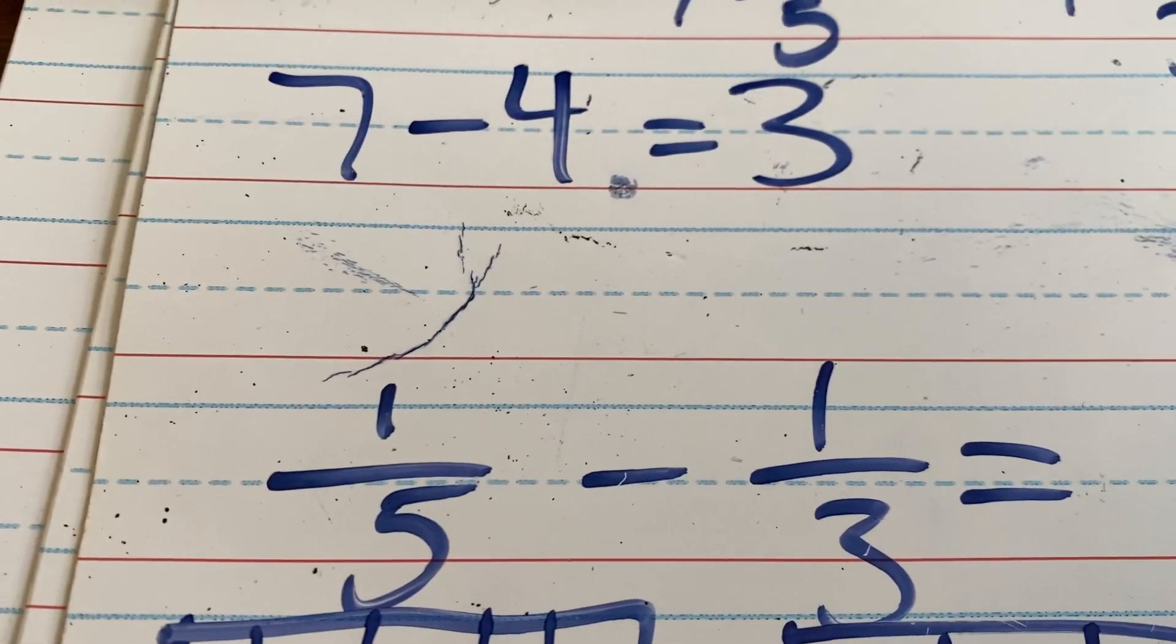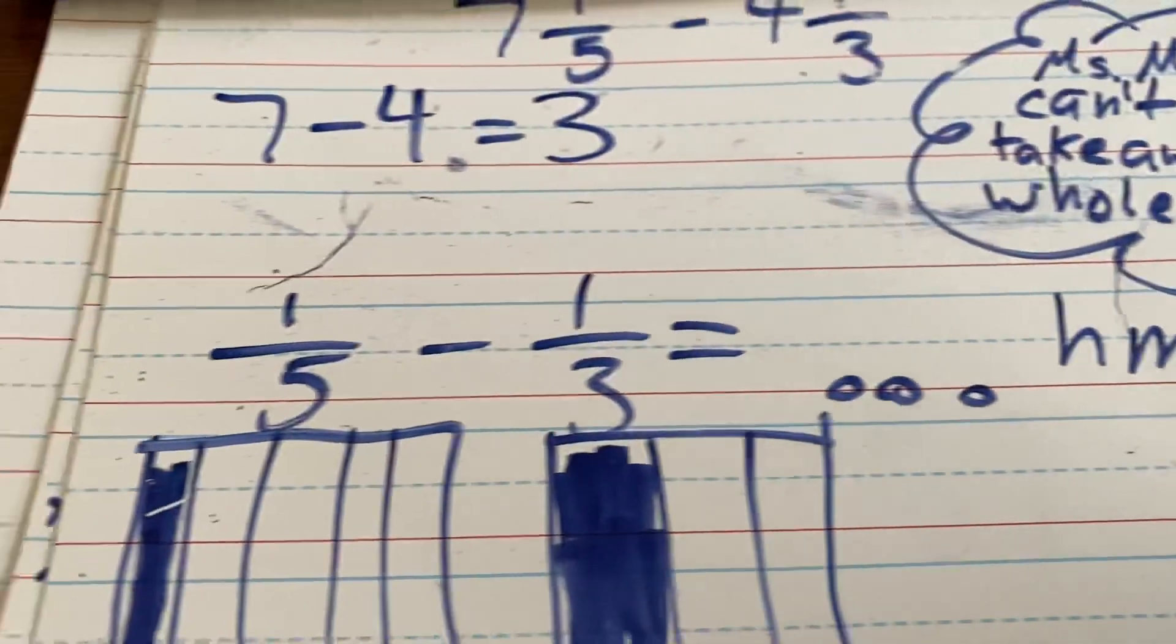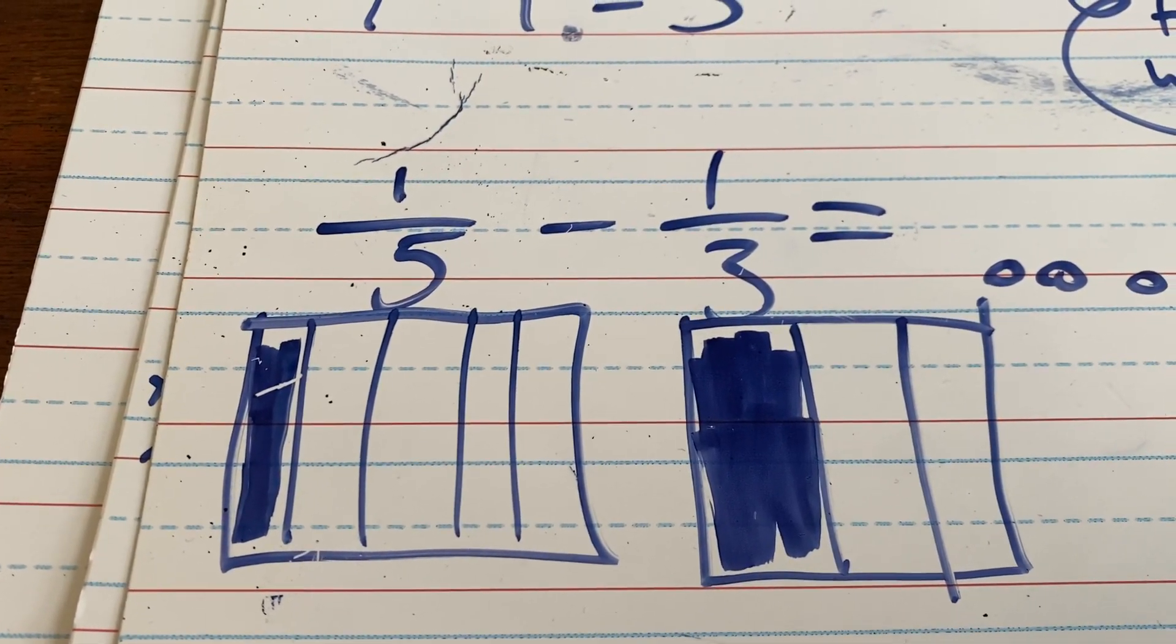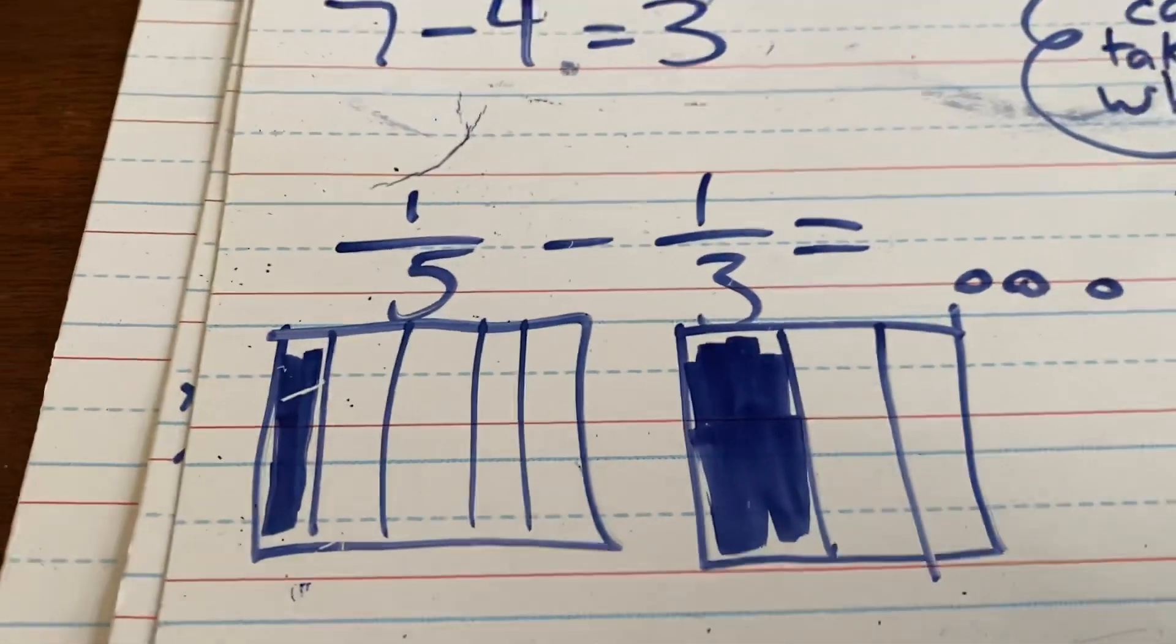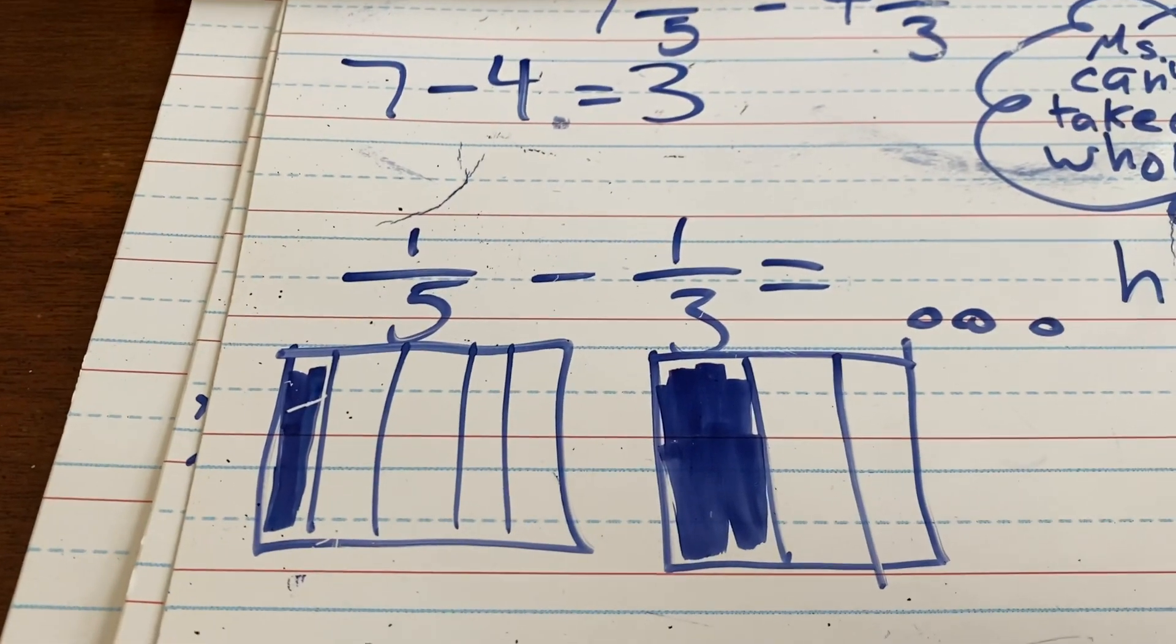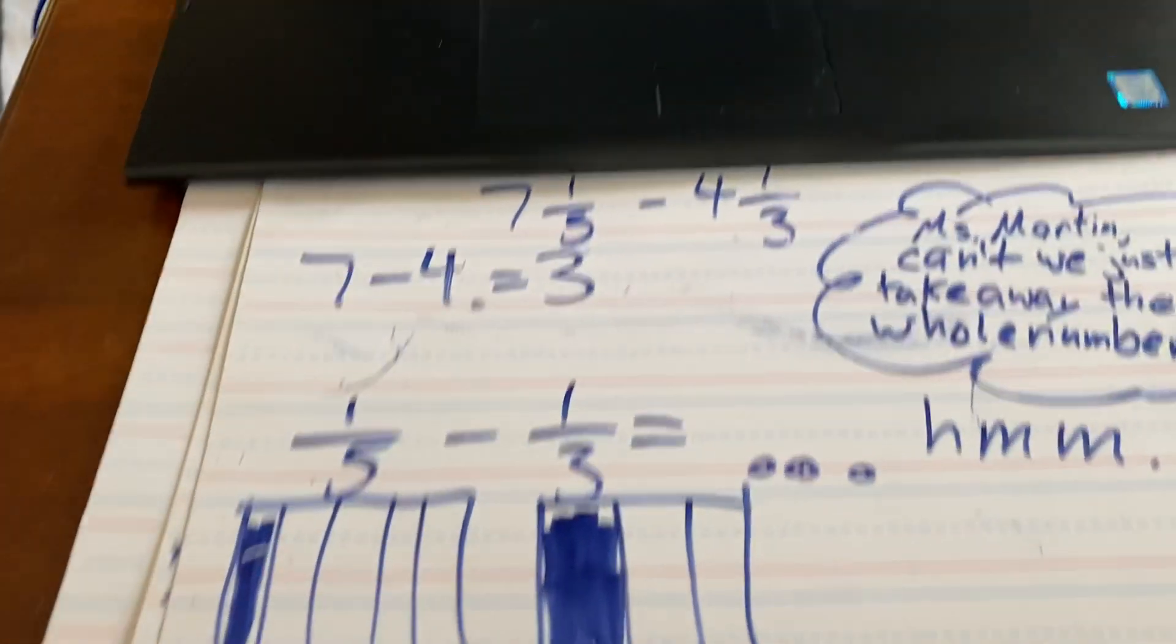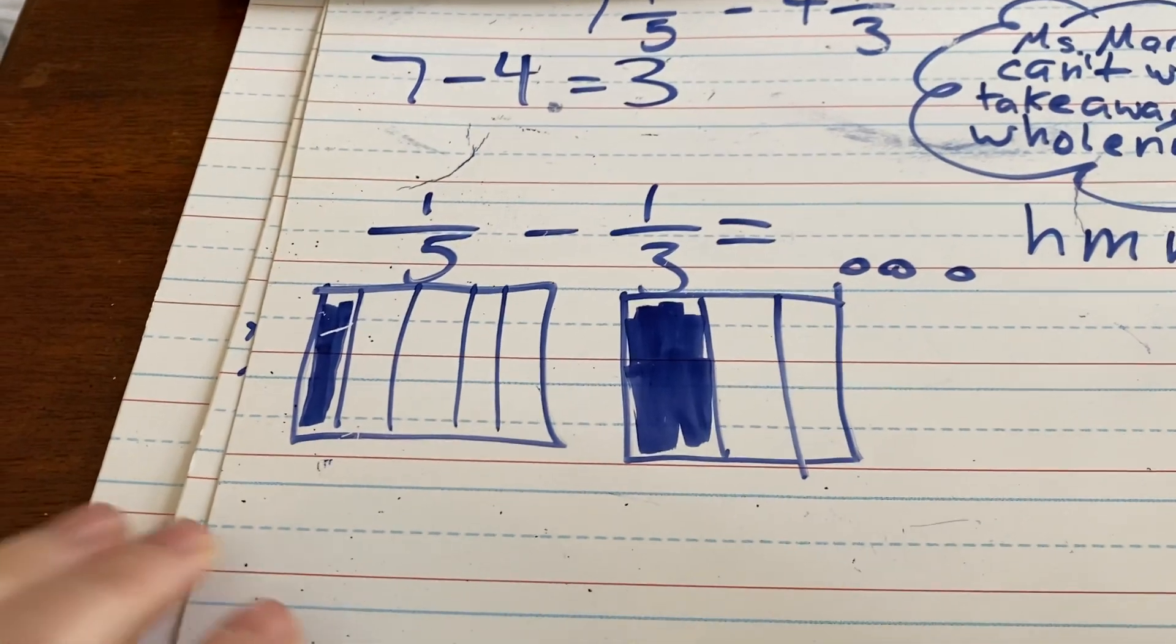However, can we do that? 1/5 minus 1/3, here's what we have here. 1/5 is a smaller fraction than 1/3. It's a smaller number. So, we cannot take 1/3 out of 1/5. It doesn't have it. So, that will not work. So, we can't just take away the whole numbers and then subtract the fractions. That's not going to work that way.